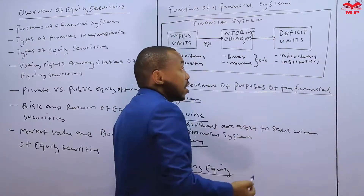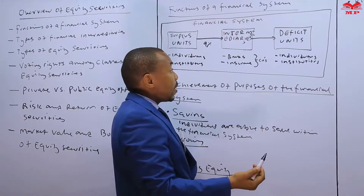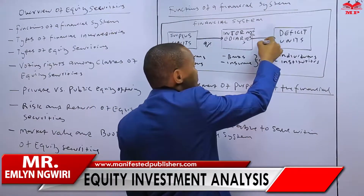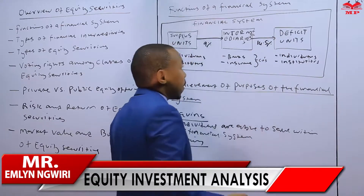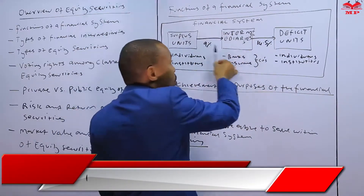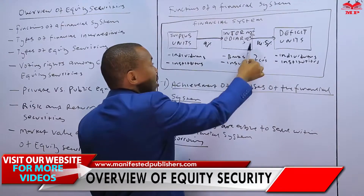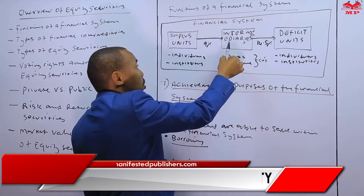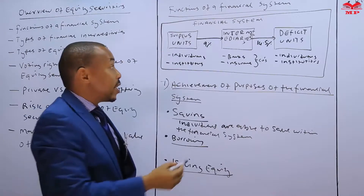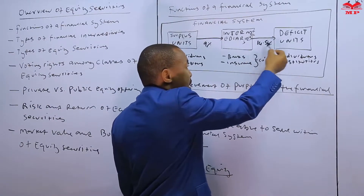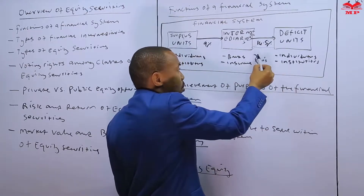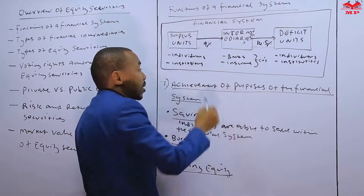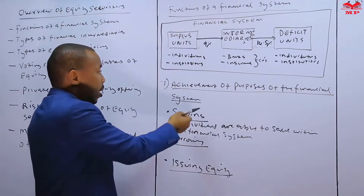For example, if commercial banks offer depositors a 9% return on investment, the intermediary then allocates those funds to deficit units — individuals or institutions in need of money — and charges them a higher rate, say 14.5%. The intermediary needs to make a profit to compensate the surplus units, which is why they charge a higher rate to borrowers.